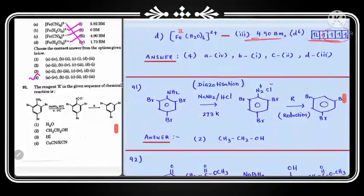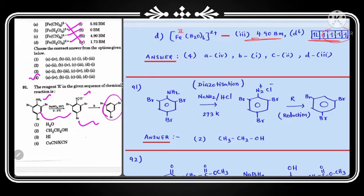Question number 91: tribromoaniline reacts with NaNO₂ and HCl at 0–5°C forming a diazonium compound. The diazonium compound then reacts with reagent R to give tribromobenzene. The first step is diazotization; the second step is a reduction reaction. For this reduction, ethanol is used as the reducing agent, since ethanol can be easily oxidized and reduces the diazonium chloride to tribromobenzene. The answer is option 2.